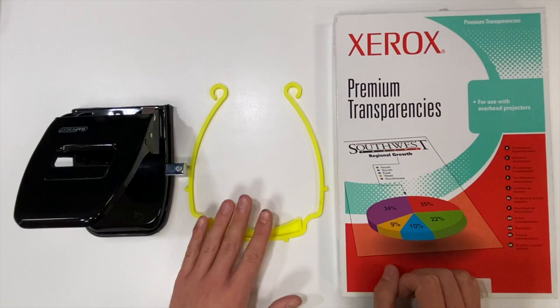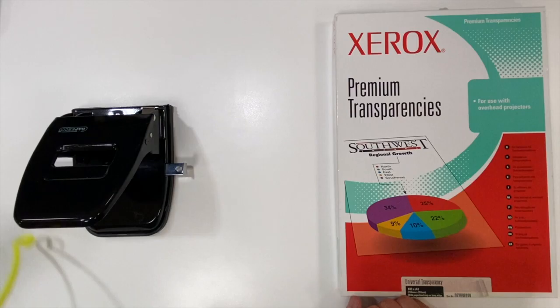To assemble the face shield we need a hole puncher set to A6 size, a 3D printed face shield frame, and an A4 acrylic sheet. Overhead projector sheets or binding covers are cheap and readily available from office suppliers.